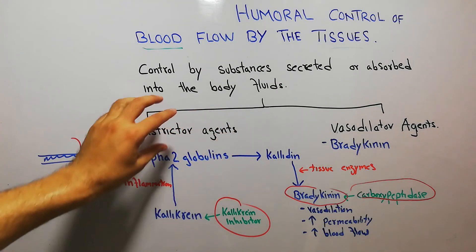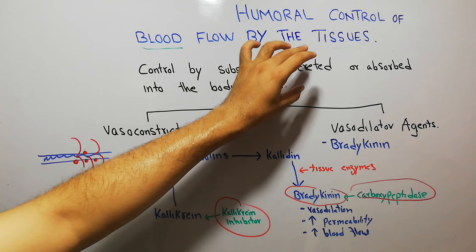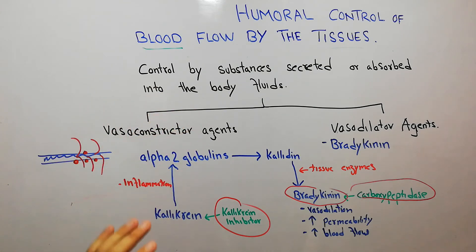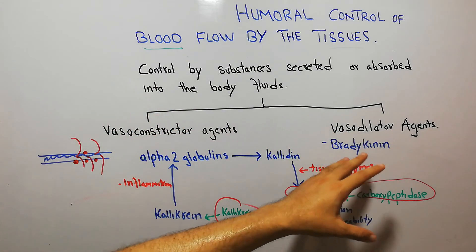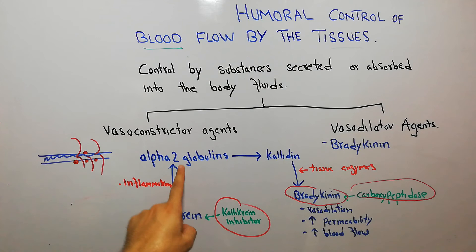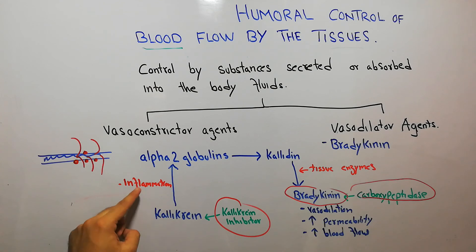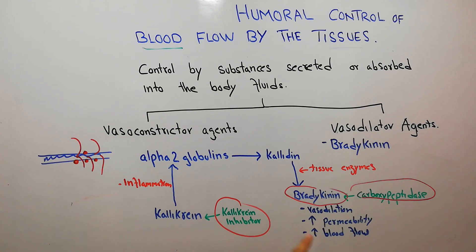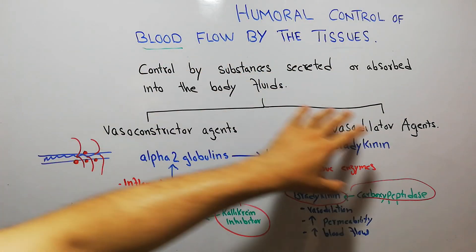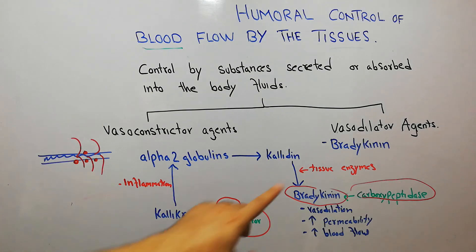Just as vasoconstrictor agents — epinephrine, norepinephrine, angiotensin 2 — control blood flow by vasoconstriction, vasodilator agents including bradykinin and histamine control blood flow by vasodilation. Bradykinin is the most important vasodilator agent; it is split from alpha-2 globulins by kallikrein, which is activated by inflammation. Once formed, bradykinin causes vasodilation, increases capillary permeability, and increases blood flow, serving as a key humoral vasodilator agent in blood flow regulation.